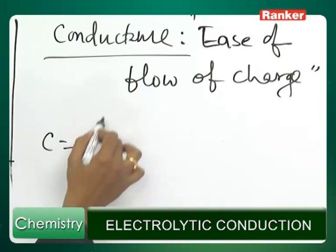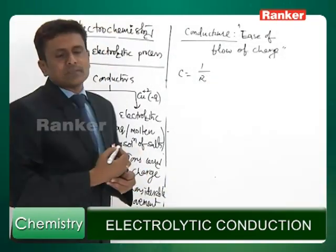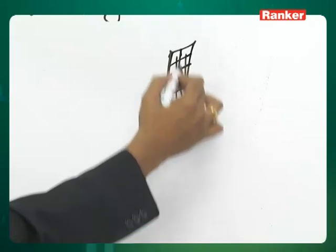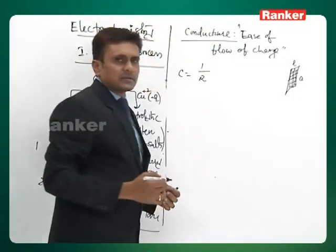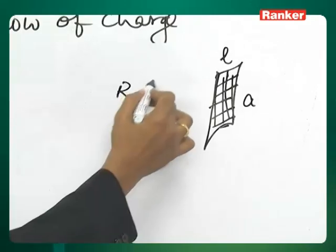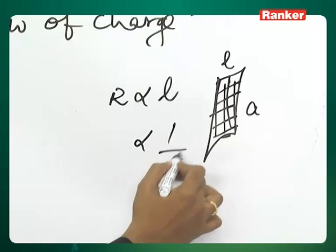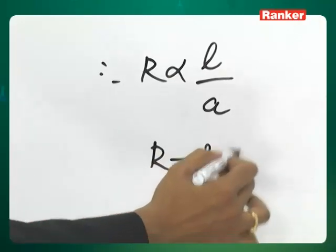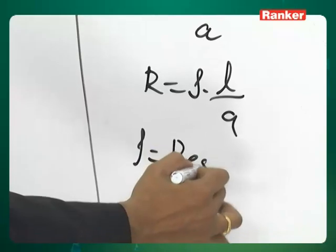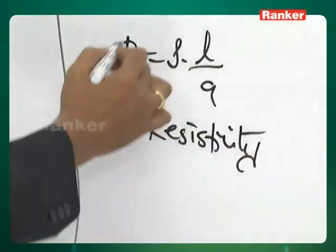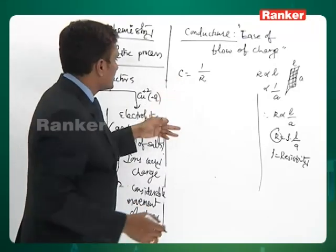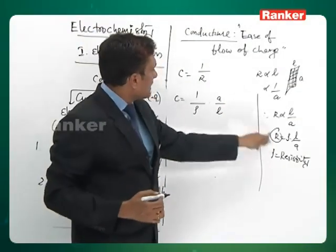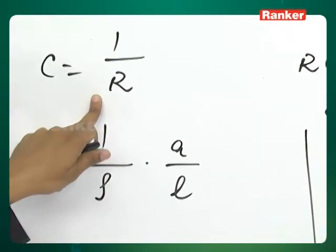Conductance is the reciprocal or inverse of resistance. For any specimen — say a metallic conductor of length L and cross-sectional area A — resistance R is directly proportional to L and inversely proportional to A, giving R = ρ × (L/A), where ρ (rho) is resistivity. Since our interest is conductance, substituting gives conductance C = (1/ρ) × (A/L).